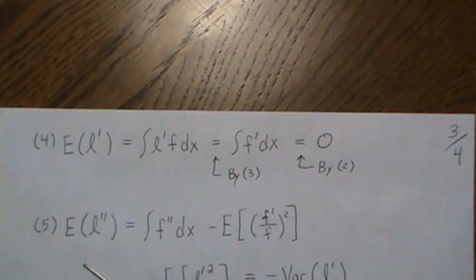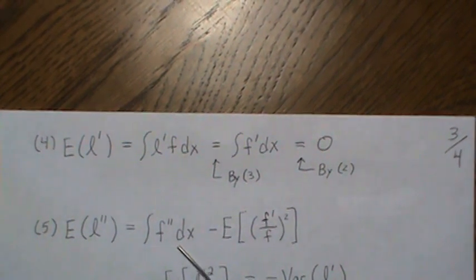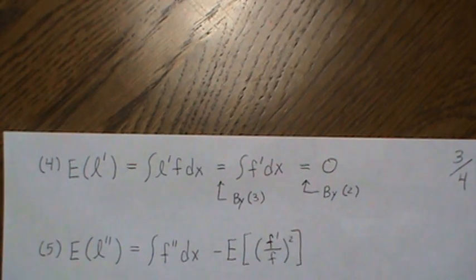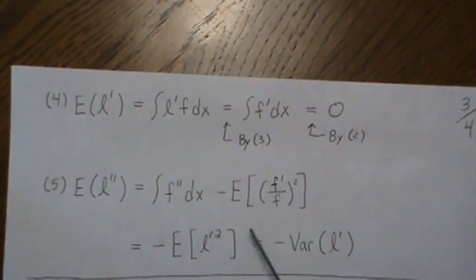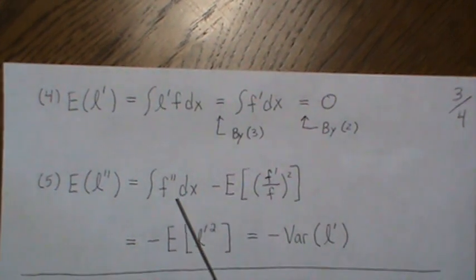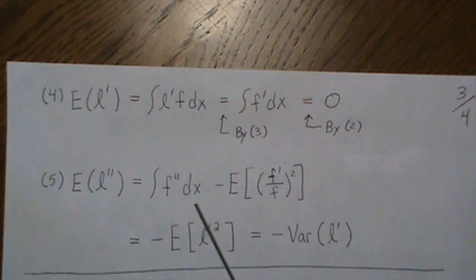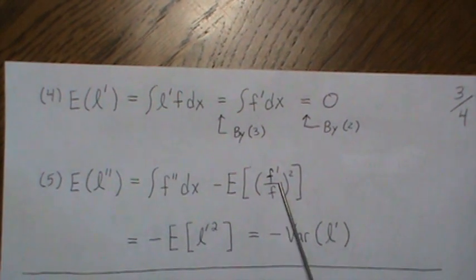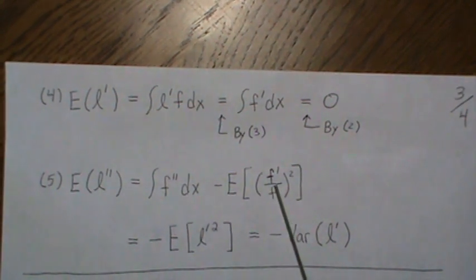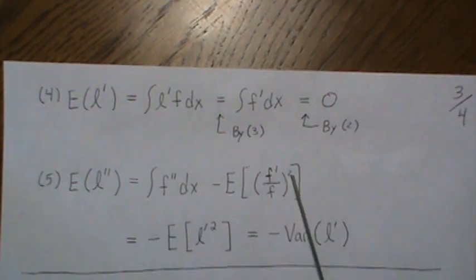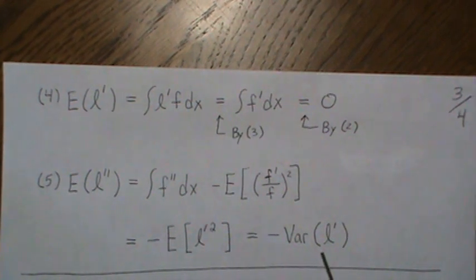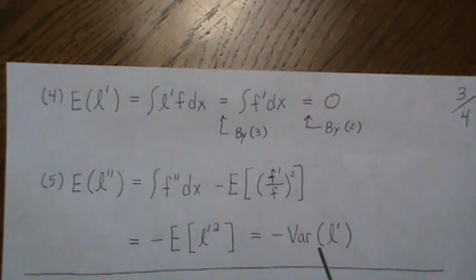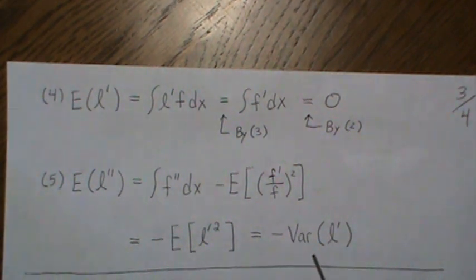The expected value of the second derivative of the log likelihood can be written as: we get a cancellation, and the first term equals zero by our earlier point, so it drops away. The remaining piece has F'/F which is just L', and since the mean of L' is zero, this ends up being minus the variance of the first derivative of the log likelihood. So: E[L''] = -Var(L').